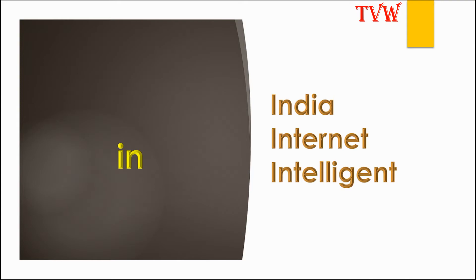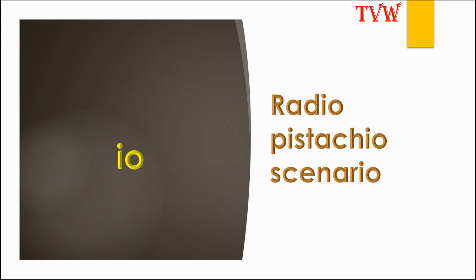The letters IN make the sound 'in' as in India, internet, intelligent. The letters IO make the sound 'eo' as in radio, pistachio.